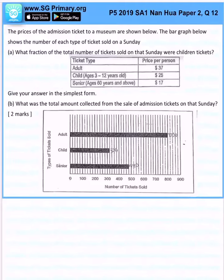The prices of the admission ticket to a museum are shown below. The bar graph below shows the number of each type of tickets sold on a Sunday. What fraction of the total number of tickets sold on that Sunday were children's tickets? Okay, so we know that for adults, right...